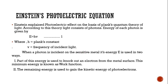When a photon is incident on the sensitive metal surface, its energy E is used in two ways. First, part of this energy is used to knock out an electron from the metal surface. This minimum energy required to remove an electron from the metal surface is known as the work function, which is denoted as φ, φ₀, or W.